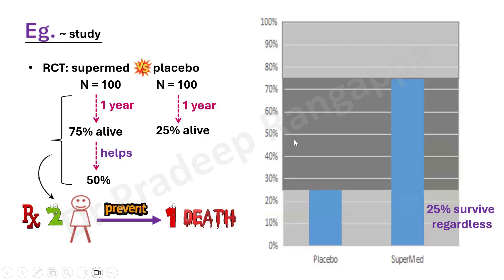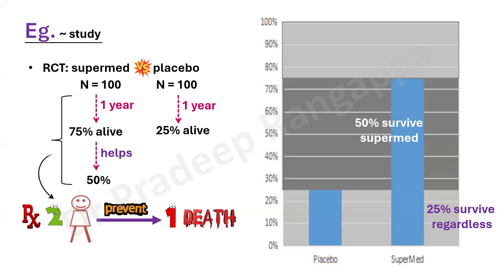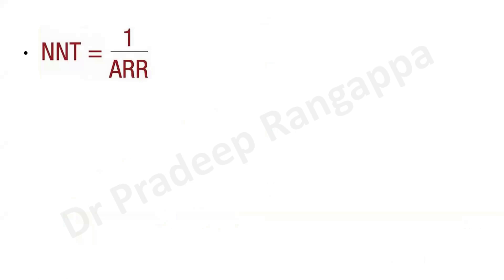Looking at this graphically: 25% survive regardless of whether super medication or placebo is used, since even in the placebo group 25% were alive. The intervention benefited the remaining 50% — shown in the gray portion of the graph. Super medication does not give 100% survival because 25% die regardless, but the NNT of two reflects the 50% who were helped.